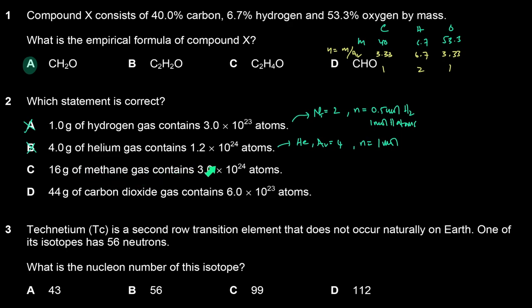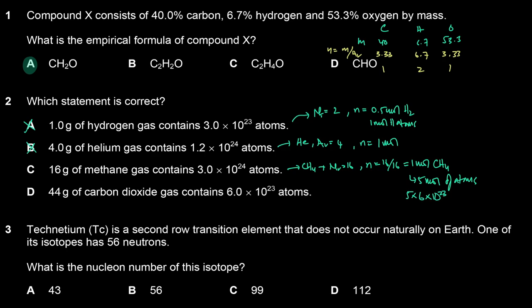16 grams of methane gas contains 3×10²⁴ atoms. Methane is CH₄ and its MR is 16, so the number of moles is 1. Each molecule of CH₄ has 5 atoms — 1 carbon and 4 hydrogen. So 1 mole of CH₄ gives 5 moles of atoms, which is 5 × 6×10²³ = 3×10²⁴ atoms. The answer is C.